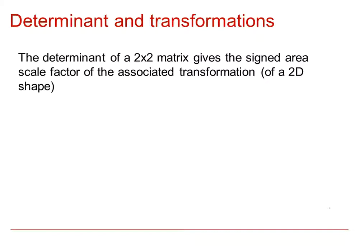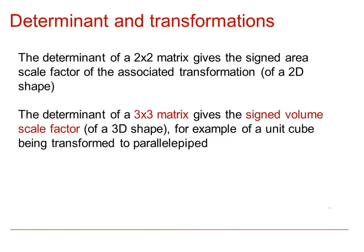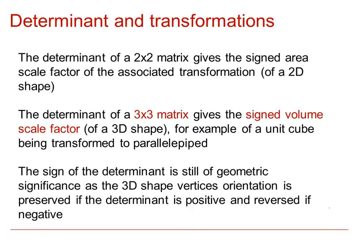The determinant of a 2×2 matrix gives the signed area scale factor of the associated transformation of a 2D shape. The determinant of a 3×3 matrix gives the signed volume scale factor of a 3D shape — for example, a unit cube being transformed to a parallelepiped. The sign of the determinant is still of geometrical significance: the 3D shape vertex orientation is preserved if the determinant is positive, and reversed if the determinant is negative.